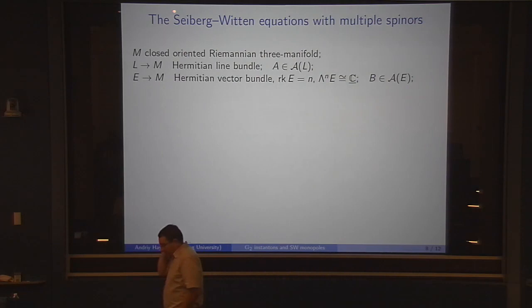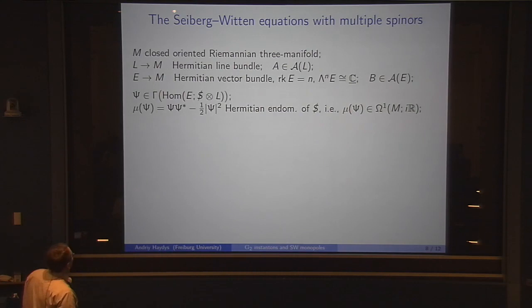There is a different place where we see Fueter sections, and this is where Seiberg-Witten monopoles come into play. For that, we don't need to know G2 geometry. We start just with a closed-oriented Riemannian 3-manifold. L is a Hermitian line bundle equipped with a connection A. An auxiliary data is a Hermitian vector bundle of rank N, whose top power is trivial, equipped with an auxiliary connection B.